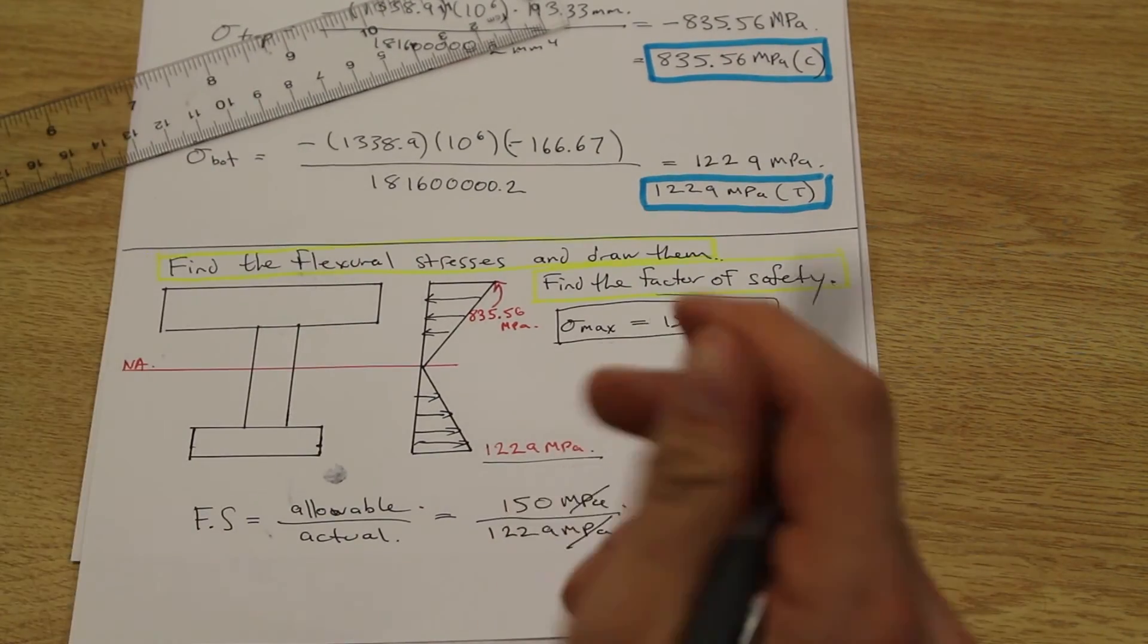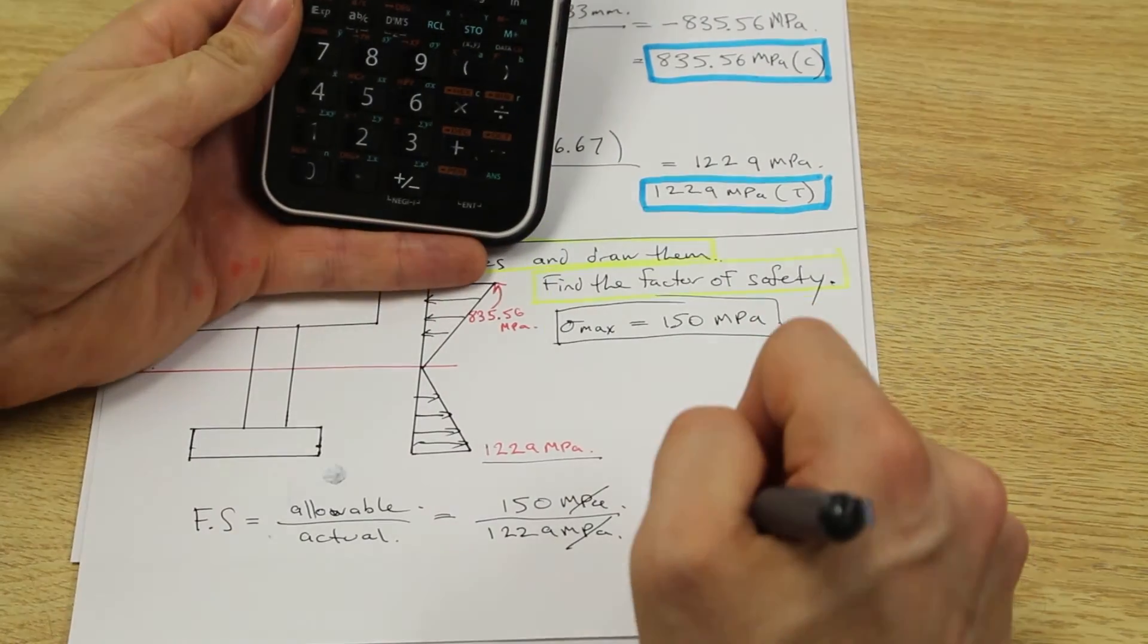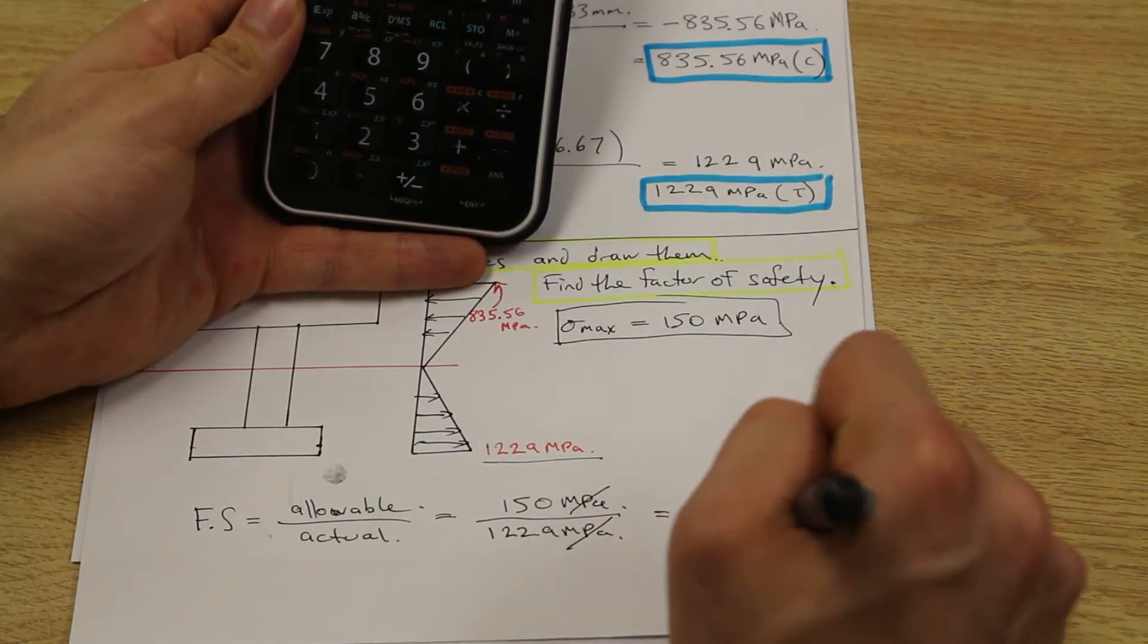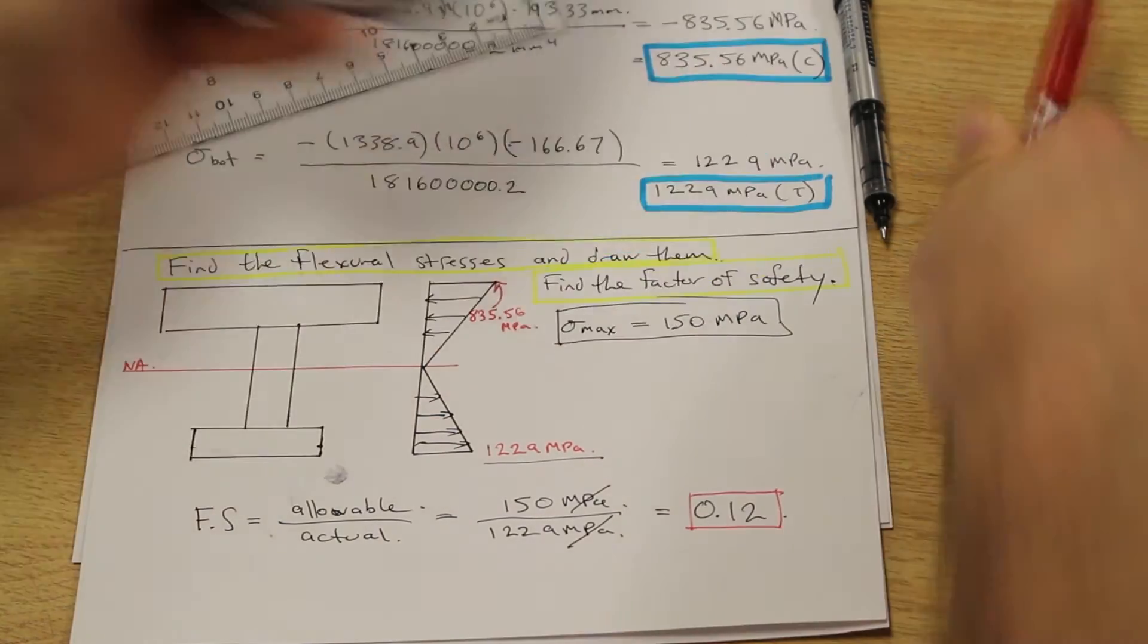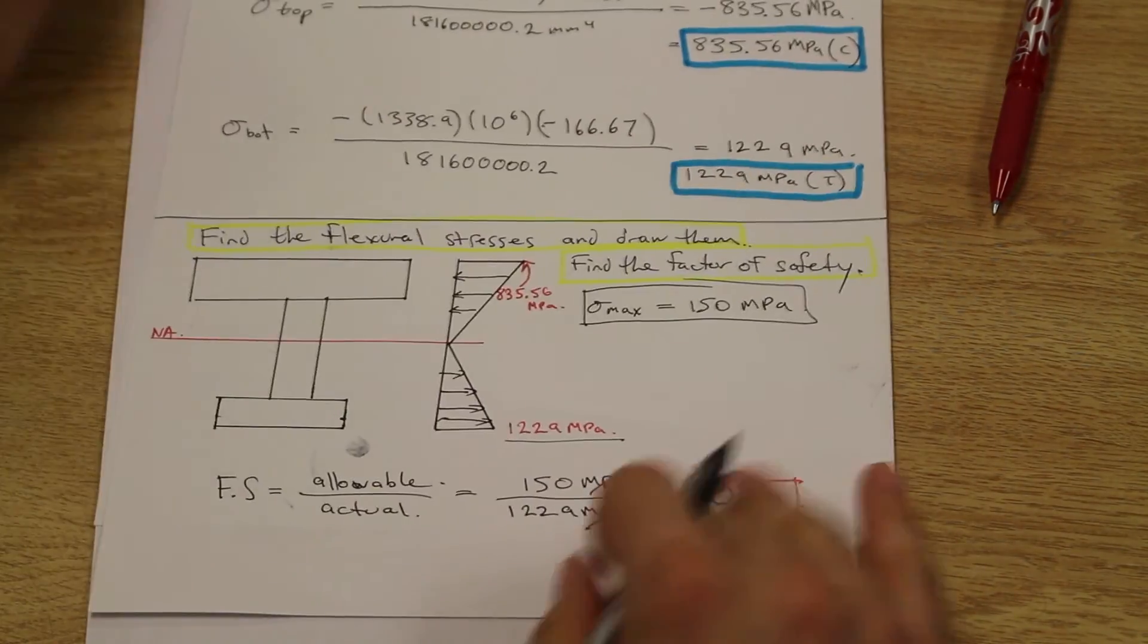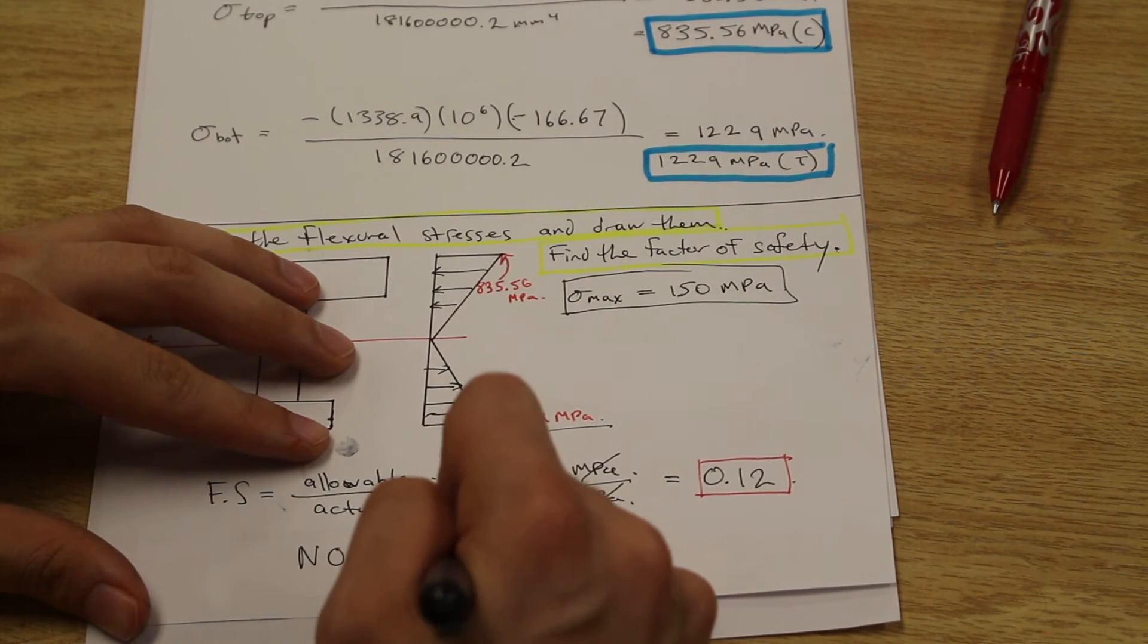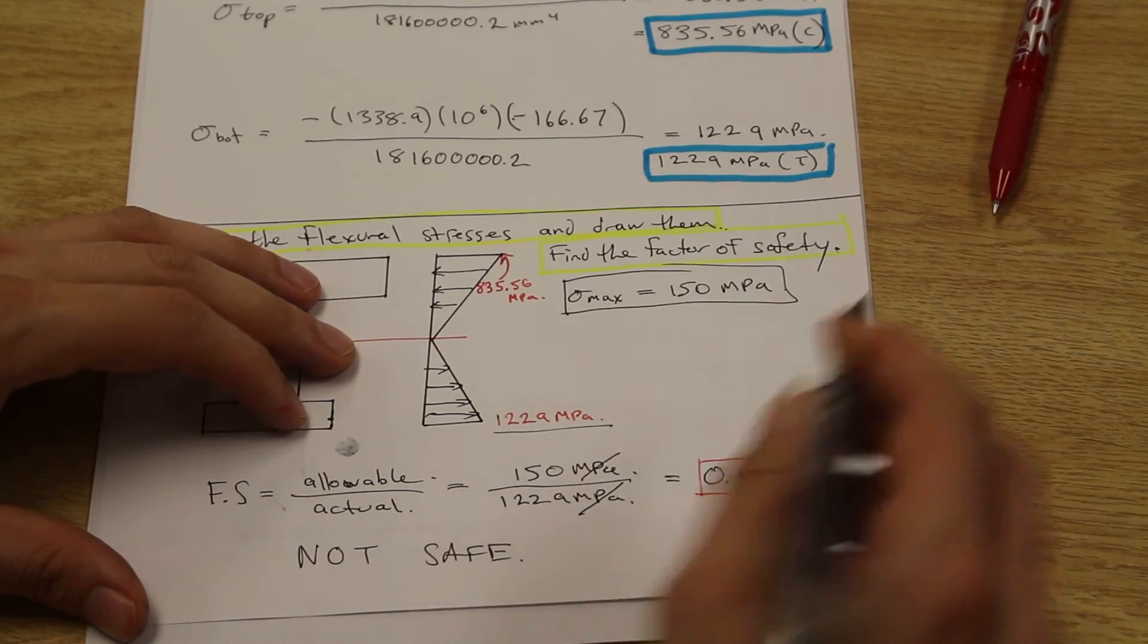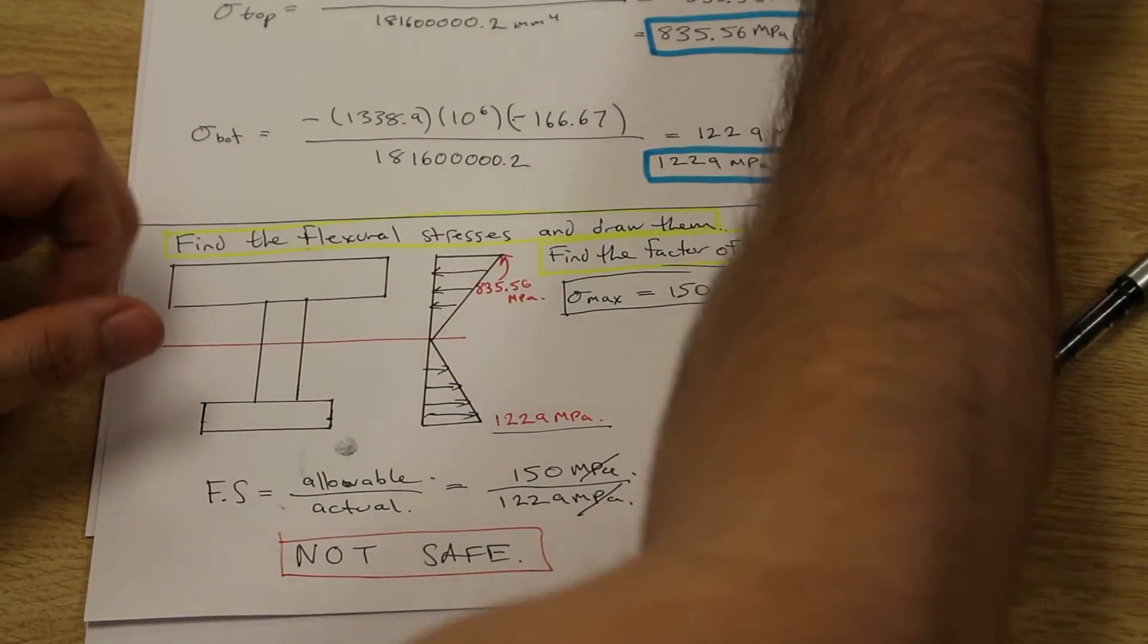We cancel those units. What do we get? A factor of safety of 0.12. So terrible. This beam is not safe.